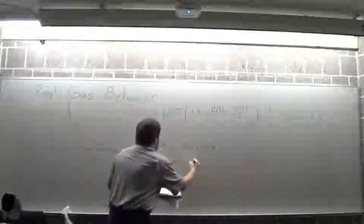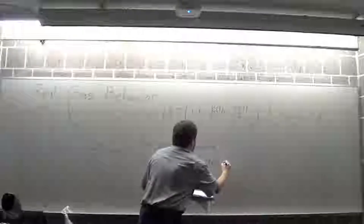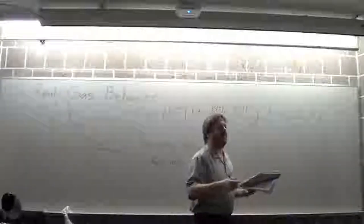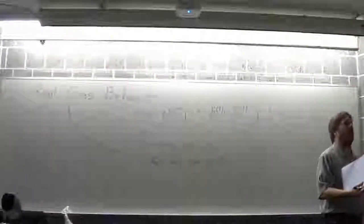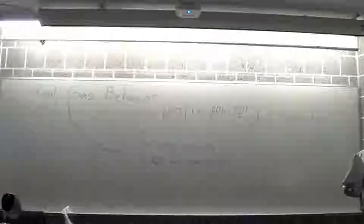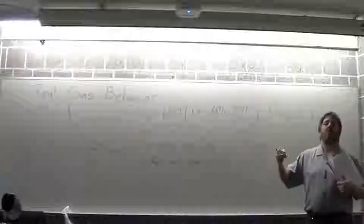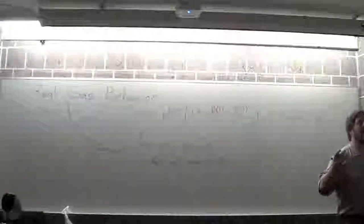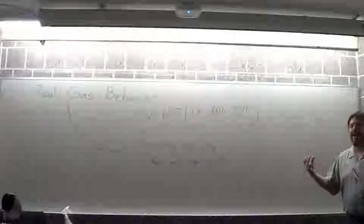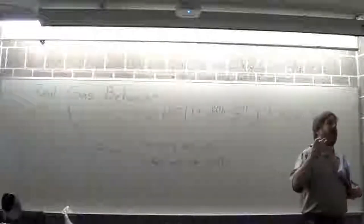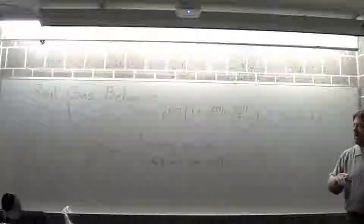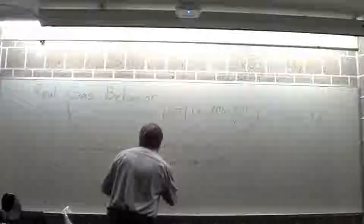Two important things about units: they multiply into new units — a kilogram times meter squared per second squared is a joule, which is fundamentally different. Division is just multiplication by one over something; subtraction is addition of a negative.